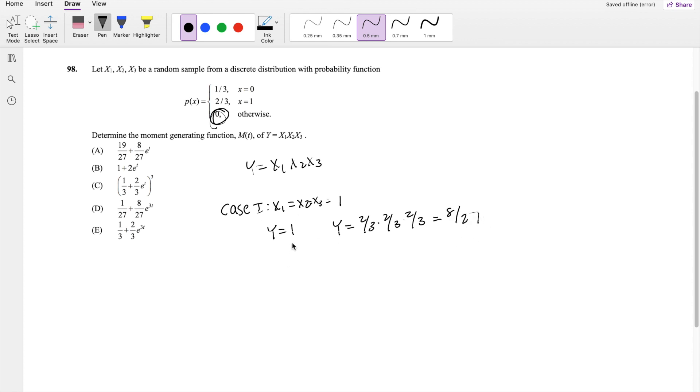I hope that makes sense, because if any of these x1, x2, or x3 is equal to 0, because it can only take 1 or 0, then this y value is going to be 0. But the y value can't be 1, it can't be 2 or 3 or 4, anything like that, because we're multiplying it and the max number is 1. So the probability of y equal to 0, which is case 2, is just 1 minus 8/27, which is equal to 19/27.